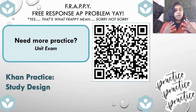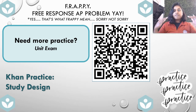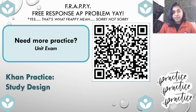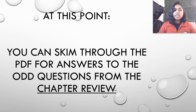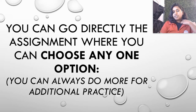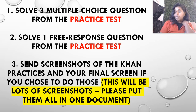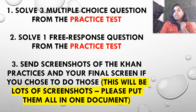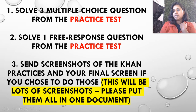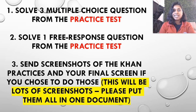Here is that unit exam on study design. I really suggest you all start working through those cons — great practice to reset and refocus on each topic as we begin to work towards those mega FRQs for the 45-minute online take-home exam. That's all I've got for you. At the end, you can skim the PDF for answers to the odd questions from the chapter review, or go directly to your assignment and choose one of three options. The most recommended option is solving one FRQ from the practice test, or solving three multiple choice questions — make sure you show your work, no work means no credit — or you can send screenshots of your cons. You don't have to be super successful in the cons; you just have to show me you're working through it. See you in the next video!